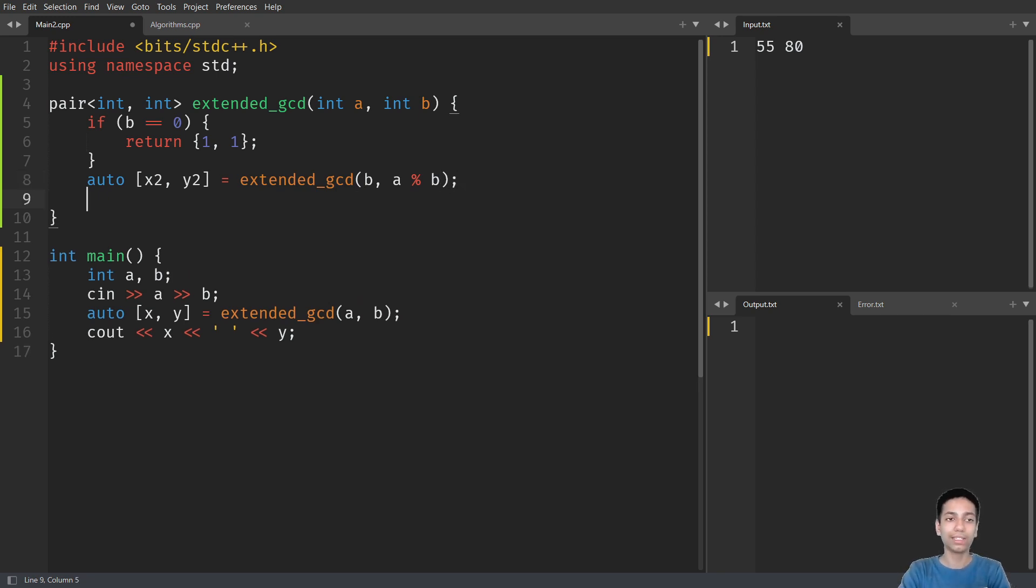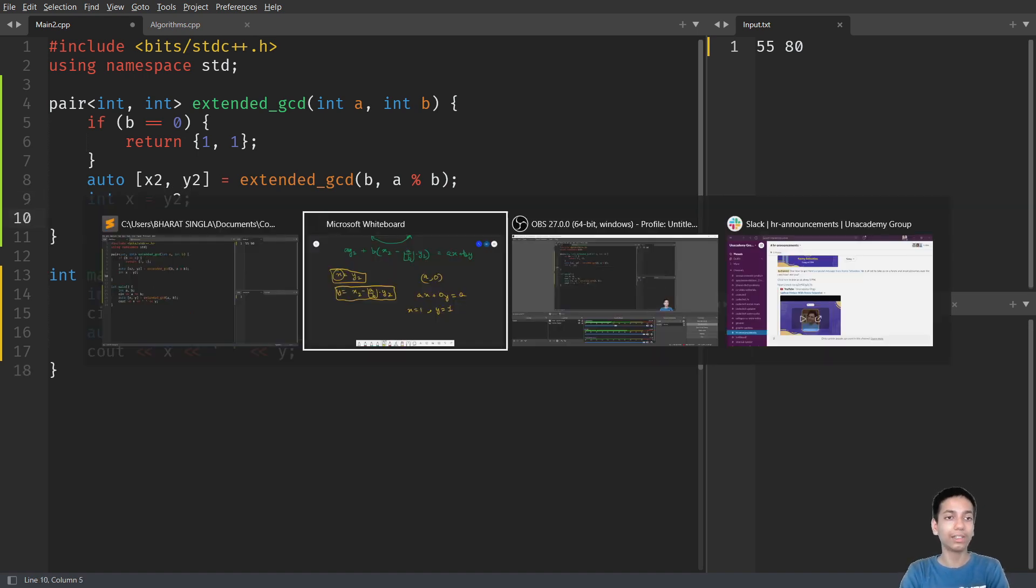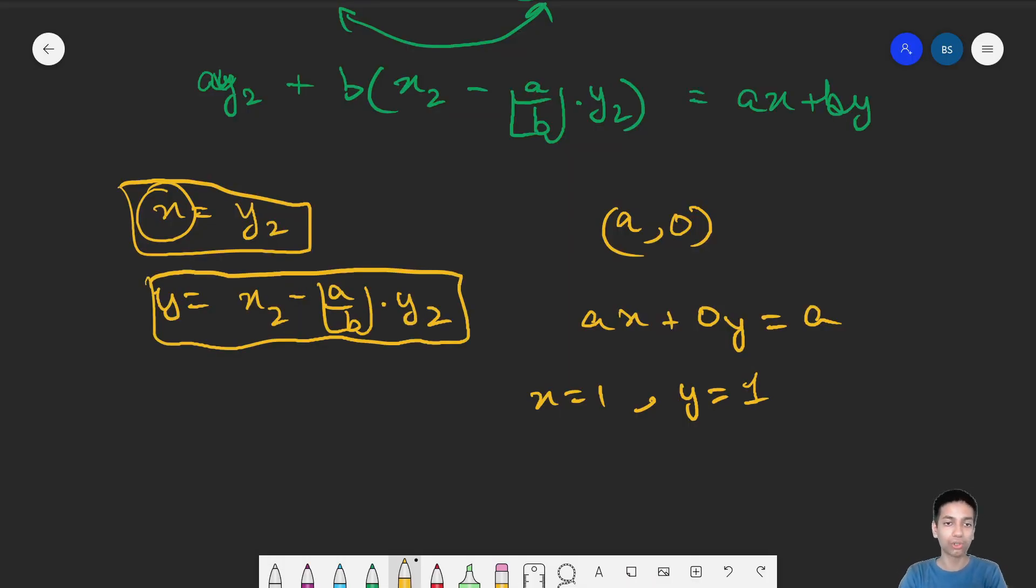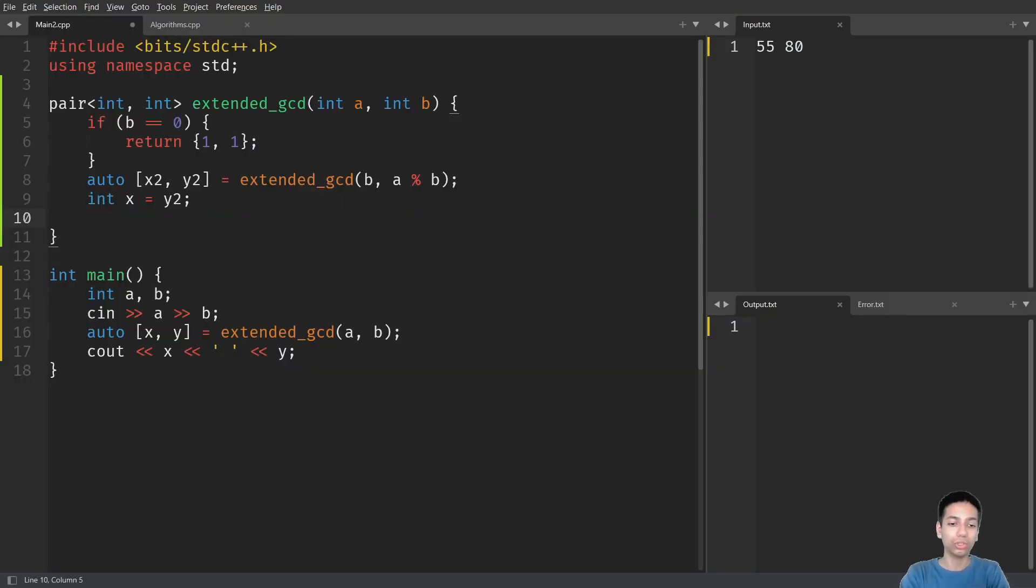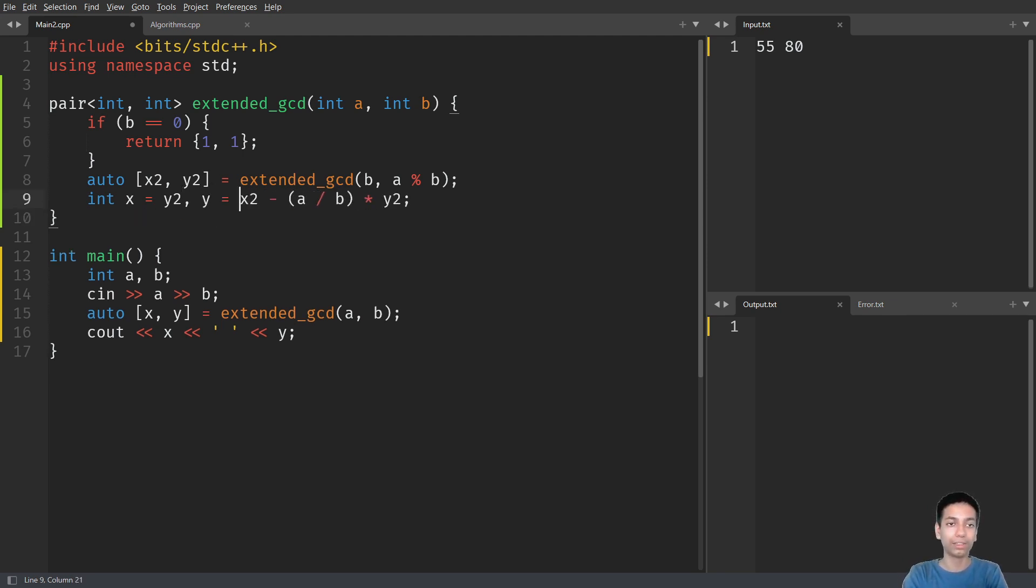Here I can simply say that X equals Y2. And what we have for Y is X2 minus A by B times Y2. So X is Y2, and Y is X2 minus A by B times Y2. This is nothing but what we have discussed, and now I can return this pair of X and Y.